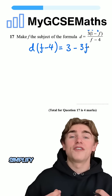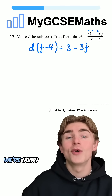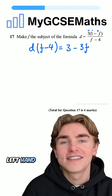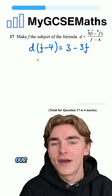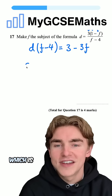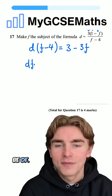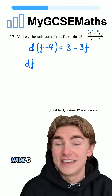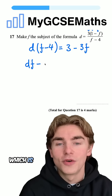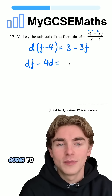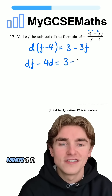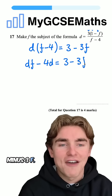Next step, we simplify again by expanding the brackets on the left-hand side. d times f gives us df, and d times minus four gives us minus four d. So the equation becomes df minus four d equals three minus three f.